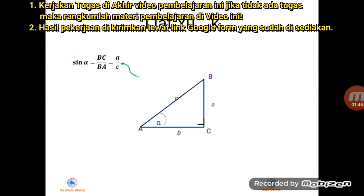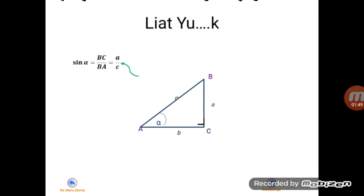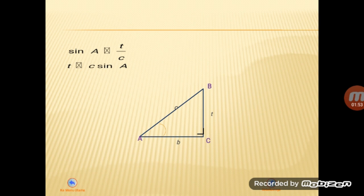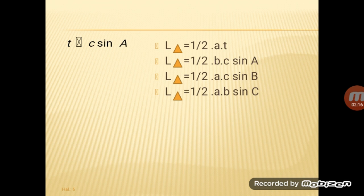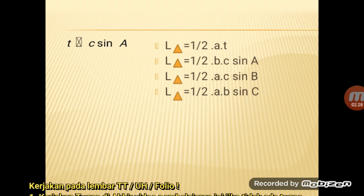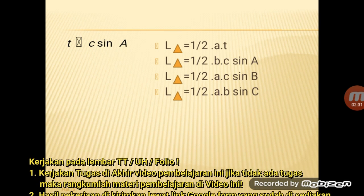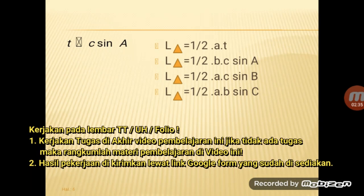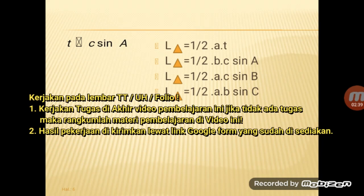Di sini kalian sudah pelajari minggu yang lalu tentang rumus perbandingan trigonometri. Kalau di sini, segitiga ABC tadi, untuk panjang sisi BC itu saya ganti T, maka untuk nilai sin A itu sama dengan T per C. Sehingga T itu sama dengan C kali sin A. Kalau tadi T sama dengan C kali sin A, maka luas segitiga tadi itu adalah setengah alas kali tinggi, sedangkan tingginya adalah C kali sin A, maka luas segitiganya bisa ditulis sama dengan setengah kali alas B, sedangkan tingginya adalah C kali sin A.